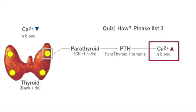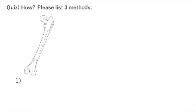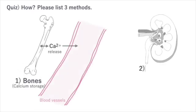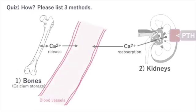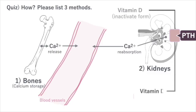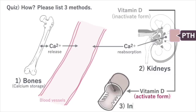Can you list three specific methods? PTH dissolves bone, promotes calcium reabsorption in the kidneys, and activates vitamin D in the kidneys to enhance calcium absorption from the intestines.